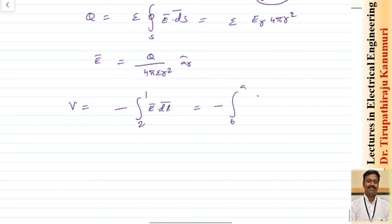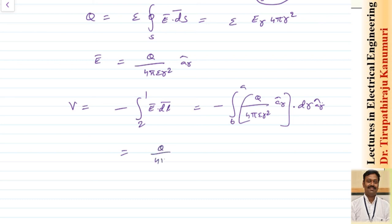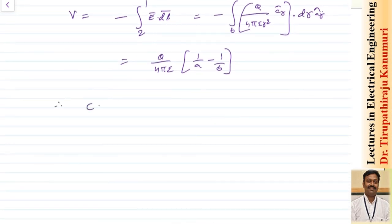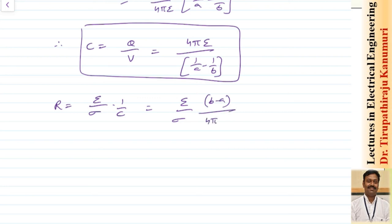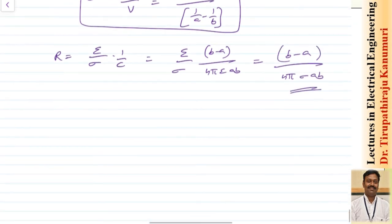The potential V equals the integral from b to a of q divided by 4π·epsilon·r² in a_r, dot product with dr·a_r. Evaluating gives V equals q divided by 4π·epsilon times (1/a minus 1/b). Therefore capacitance C equals q divided by V equals 4π·epsilon divided by (1/a minus 1/b). The leakage resistance is R equals epsilon divided by sigma times 1/C, which simplifies to R equals (b minus a) divided by 4π·sigma·a·b.